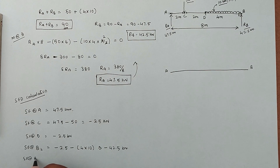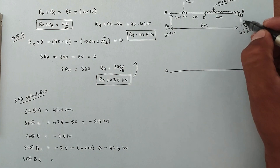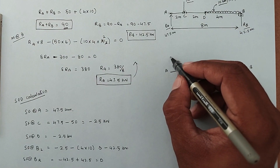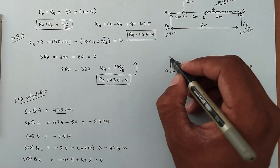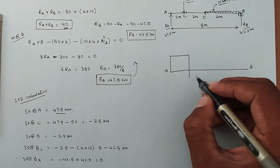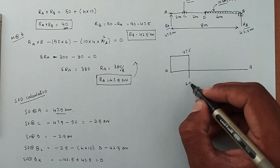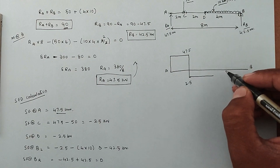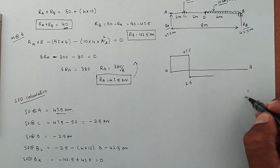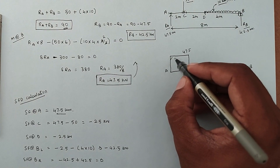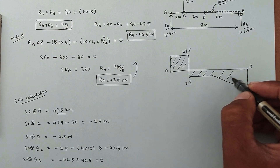Shear force at B right side: we take minus 42.5 (left side value) plus the clockwise reaction RB of 42.5 kN, giving zero. So the SFD goes from positive 47.5 kN at A, drops to minus 2.5 kN at C, remains minus 2.5 kN till D, then drops sharply to minus 42.5 kN approaching B, and returns to zero at B. The SFD has positive and negative regions.